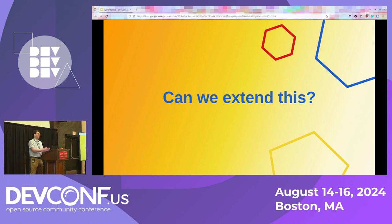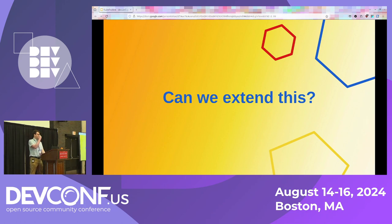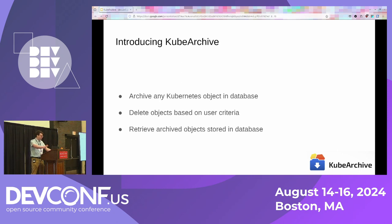The problem with Tekton Results is it's only focused on Tekton — you're only restoring your task runs and pipeline runs. But you might also be using Shipwright, or you've got Kubernetes jobs, or some other operator creating these objects too, and they won't get cleaned up by Tekton Results because it's not designed for that. What if we could have something that provides the same kind of functionality as Tekton Results but can work with any object on your cluster, even ones you create yourself? Introducing KubeArchive.